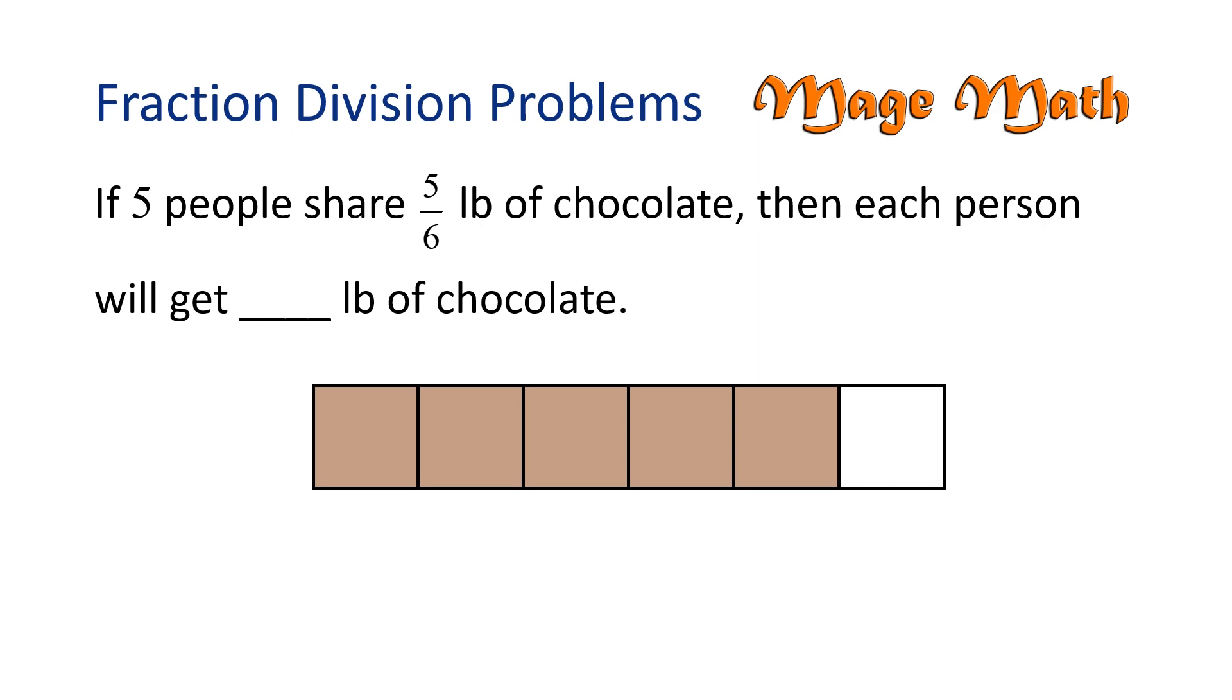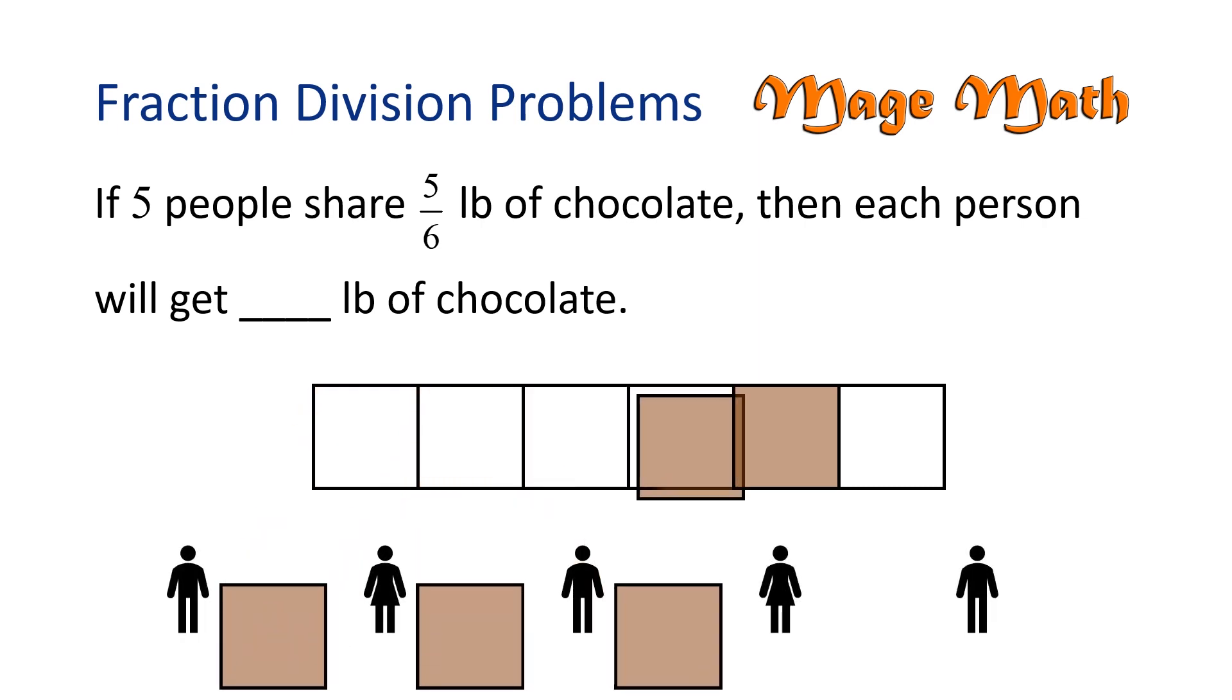We want to share the chocolate among 5 people. Each person will get 1 equal piece. What does that piece represent?